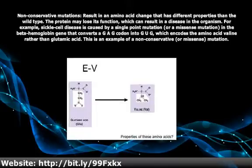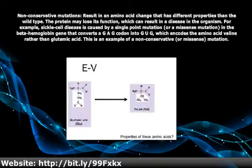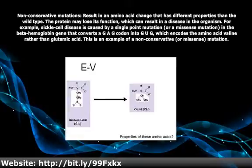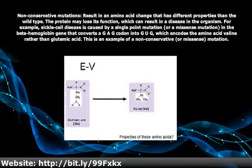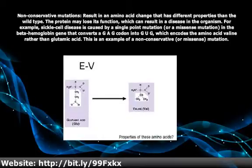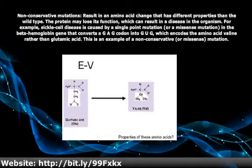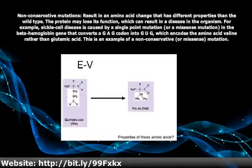For example, sickle cell disease is caused by a single point mutation, or a missense mutation, in the beta-hemoglobin gene that converts a GAG codon into GUG, which encodes the amino acid valine rather than glutamic acid. This is an example of a non-conservative mutation.